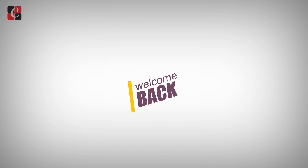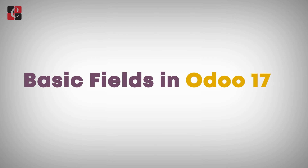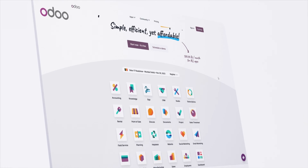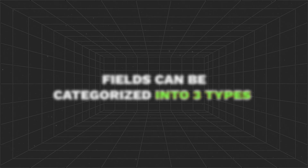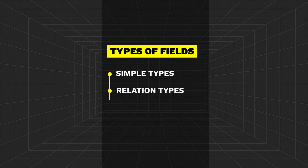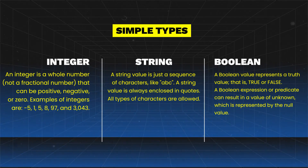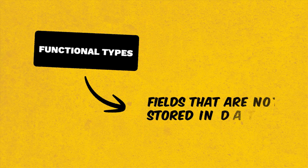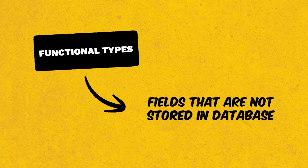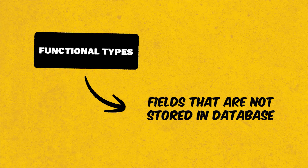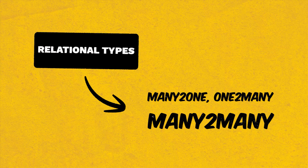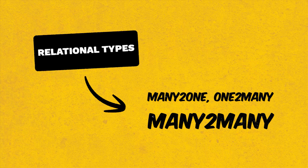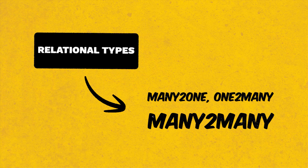Hello all, welcome back to Odoo 17 development tutorial. Today let us discuss some of the basic fields in Odoo 17. Odoo supports different types of fields for better data handling. These fields can be categorized into three types: simple types, relation types, and functional types. Fields such as integer, string, boolean, etc. belong to simple types. Fields not stored in the database belong to functional types. Fields such as many-to-one, one-to-many, and many-to-many belong to relation types.